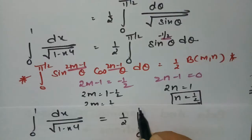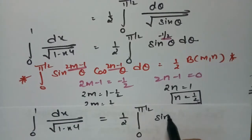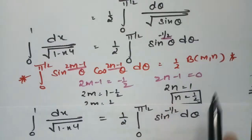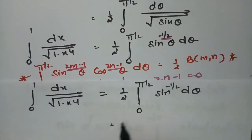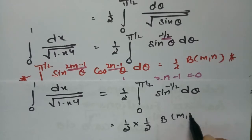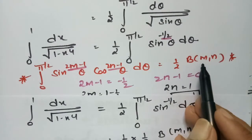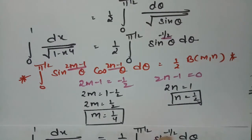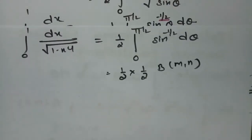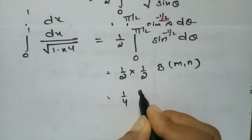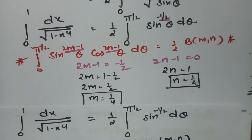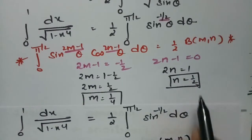Our integral ∫₀¹ dx/√(1−x⁴) becomes (1/2) times the integral from 0 to π/2 of sin^(−1/2) θ dθ. Substituting into the Beta formula, this equals (1/2) · (1/2) · β(m, n) = (1/4) · β(1/4, 1/2).